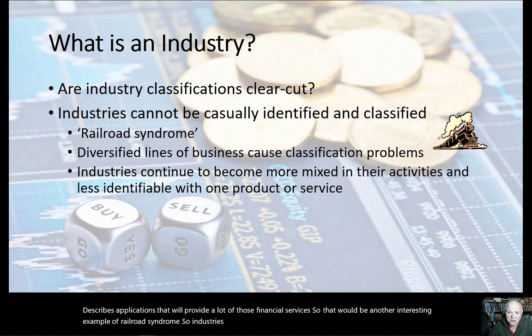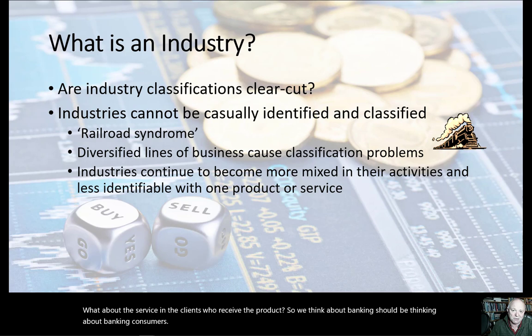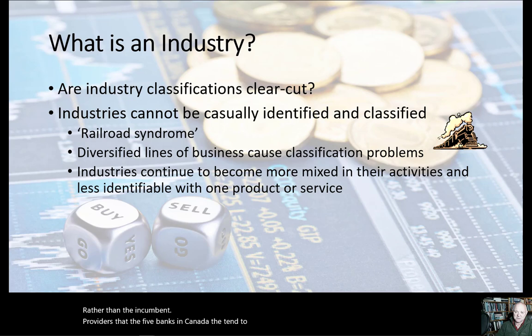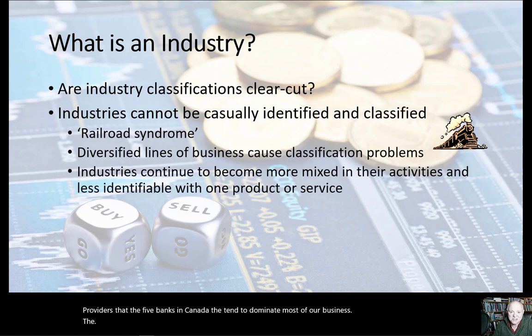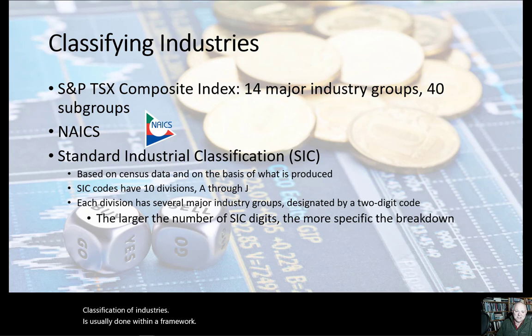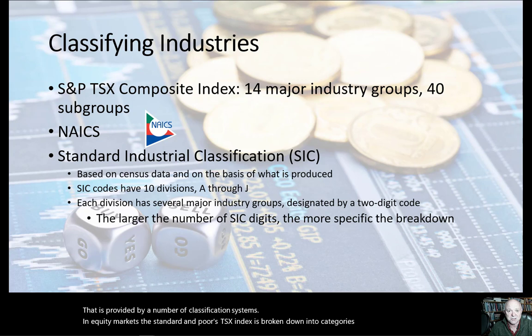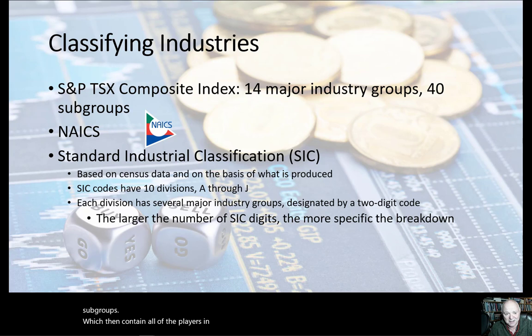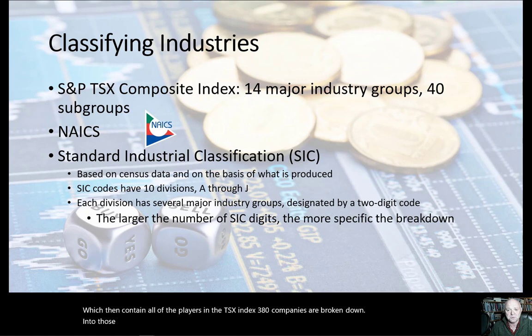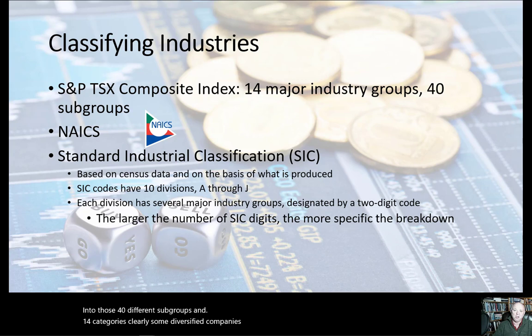When we think about banking, we should be thinking about banking consumers rather than the incumbent providers — the five banks in Canada that tend to dominate most of the business. The classification of industries is usually done within a framework provided by classification systems. In equity markets, the S&P TSX index is broken down into industry groups and subgroups — about 380 companies broken down into 40 different subgroups and 14 categories. Clearly some diversified companies don't fit very well, but somebody has to provide that classification.